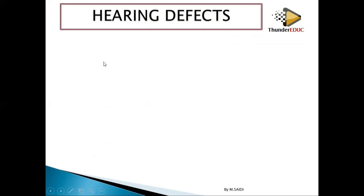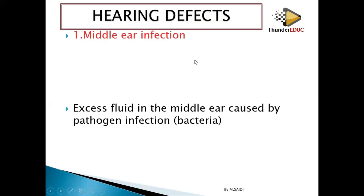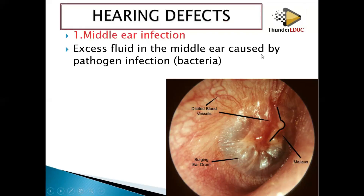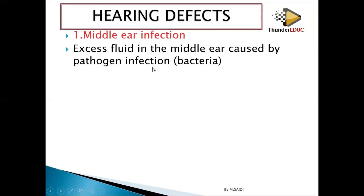Hearing defects — problems with hearing. Number one: the middle ear infection. This is whereby excess fluid in the middle ear is caused by pathogen infection. A pathogen is a disease-causing organism, for example bacteria or viruses — an organism which causes disease is called a pathogen.